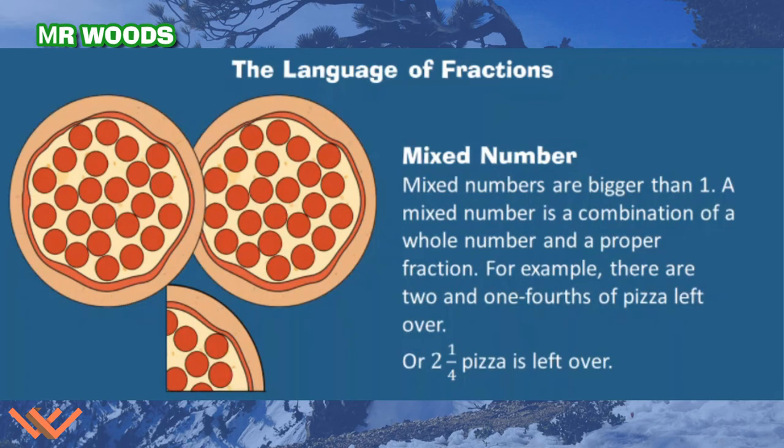Meaning, a mixed number. Mixed numbers are bigger than one. A mixed number is a combination of a whole number and a proper fraction. For example, let's take a look at these pizzas here. We have one pizza, two pizzas, and a quarter or a fourth of a pizza. We can write this as a mixed number where it is 2 and 1/4 pizza left over from the party we had last night.